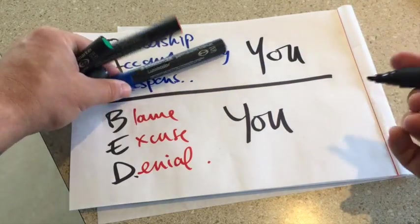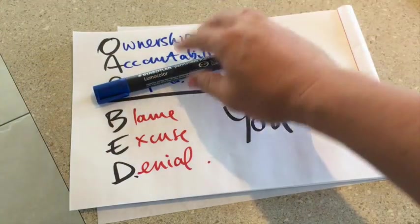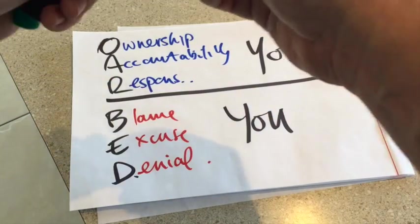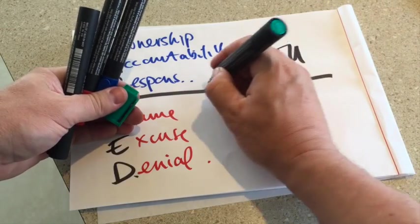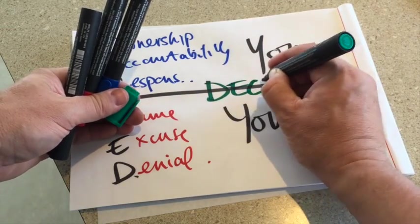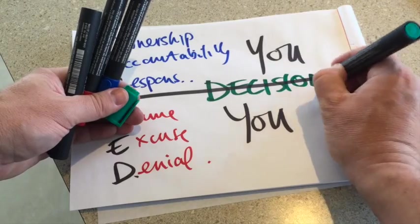So all you need to do is do a thing that starts with the letter D and that is what's right here in the middle line, and that's a decision. Everything that happens up here, ownership, accountability, and responsibility, starts with the decision.